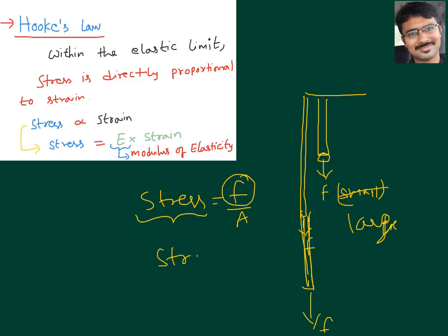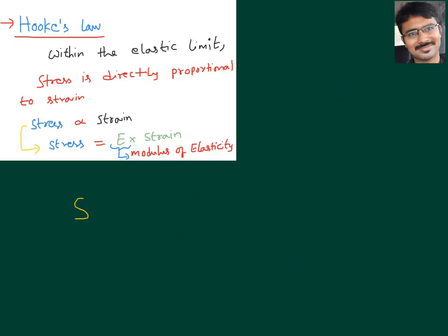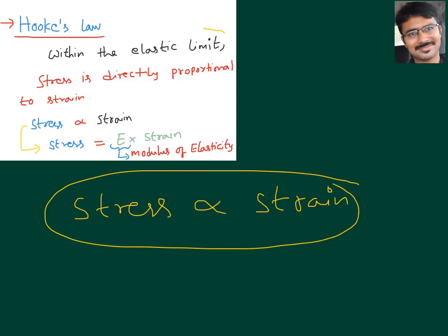So from this information we observe: stress is more, automatically strain in the body is also more. Within the elastic limit, stress is directly proportional to strain — that is called Hooke's law.